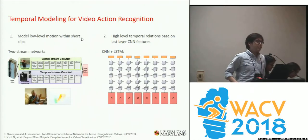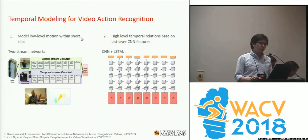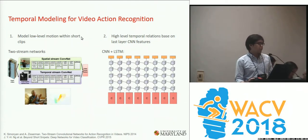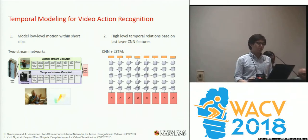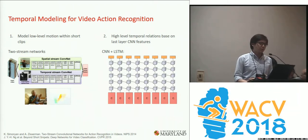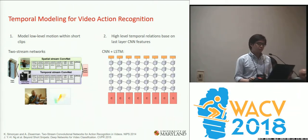Previous work on video action recognition for temporal modeling basically divides into two different directions. The first is to model the low-level motion within short clips, like within one-second clips. One example would be two-stream networks that use optical flow to represent the low-level motion in the videos.